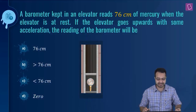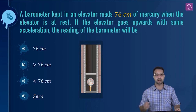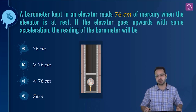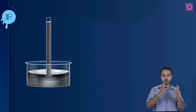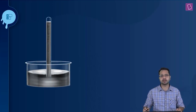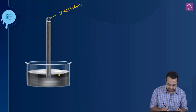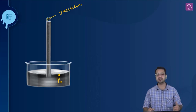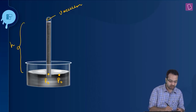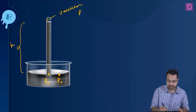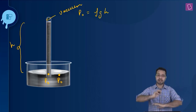Next problem: a barometer in an elevator reads 76 cm of mercury when at rest. If the elevator accelerates upward, what will the barometer read? In the stationary case, the barometer has vacuum above the mercury column. The atmosphere-exposed point has pressure p₀, and in a stationary liquid, pressure equals ρgh, so p₀ = ρgh. This is how atmospheric pressure is measured.